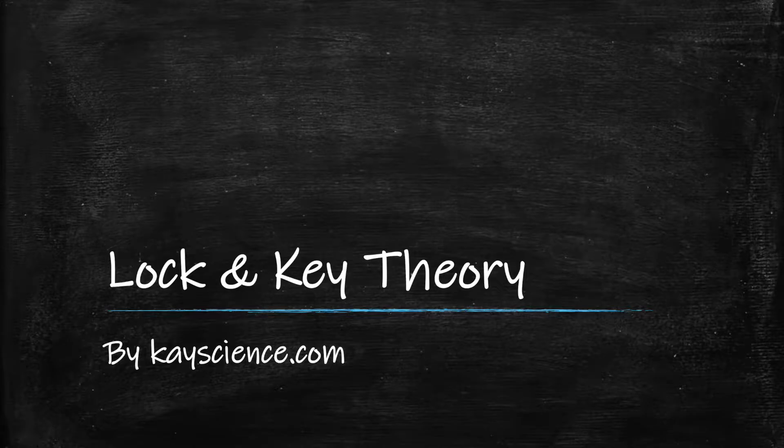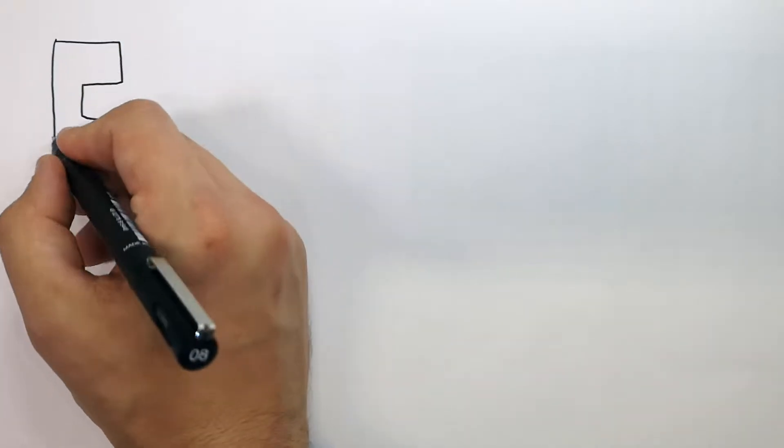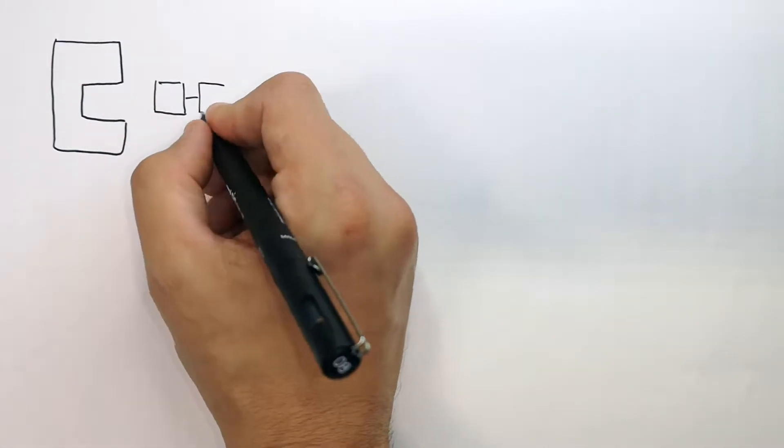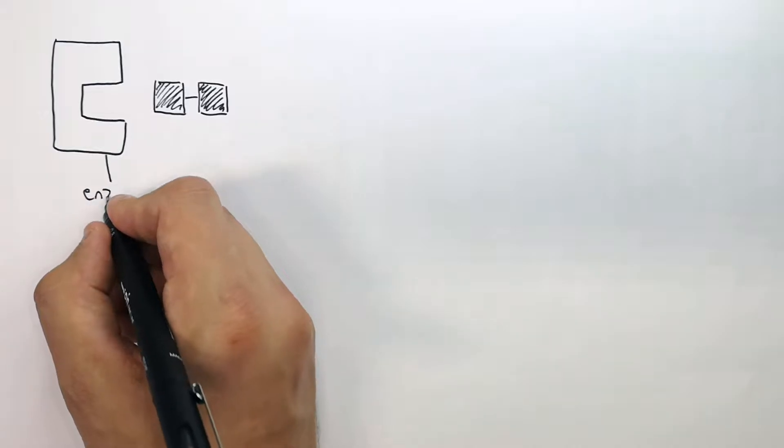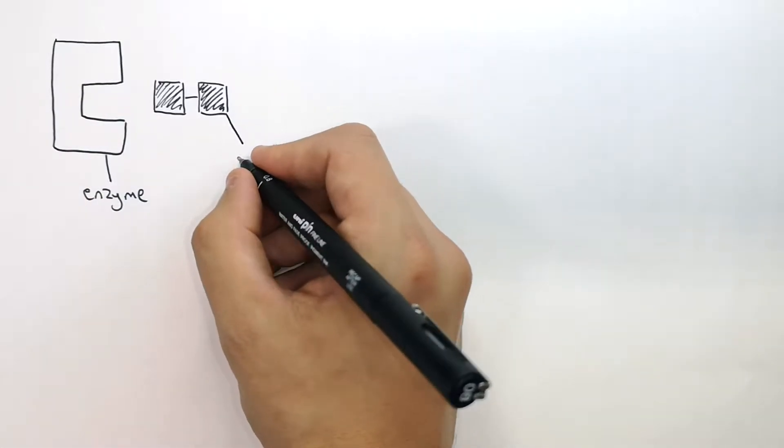The Lock and Key Theory of Enzymes by kscience.com. This is the lock and key theory for enzymes and substrates. The enzyme is the molecule that's going to break down the substrate.